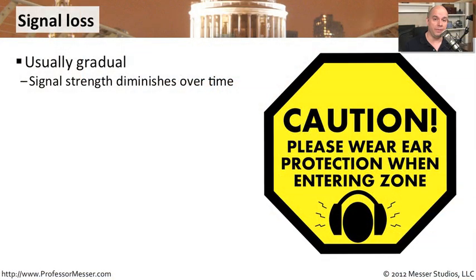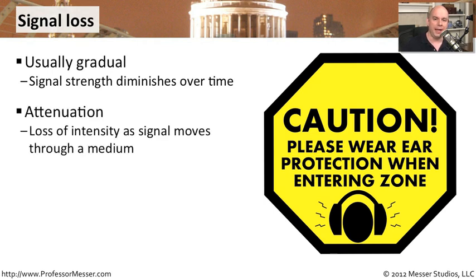Whether you're working with copper networks or fiber networks, you need to understand the fundamentals of signal loss. Signal loss is how much of that signal we are losing from one end of the connection to the other. Obviously, the signal that we get on the receive side is not going to be as strong as the one on the sending side. We call this loss attenuation — that gradual loss of intensity of the signal as it goes through a medium, whether that medium is a copper cable or a fiber connection.